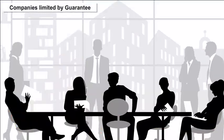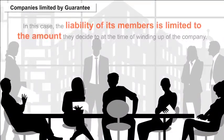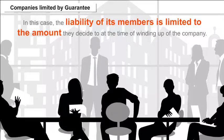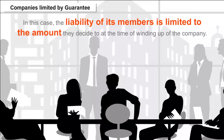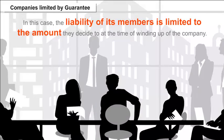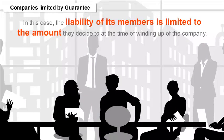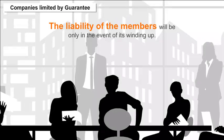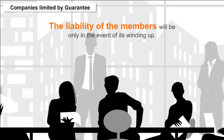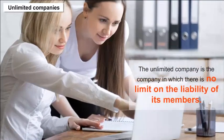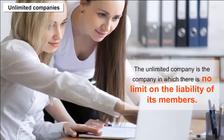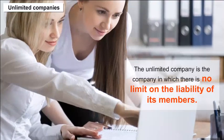Companies Limited by Guarantee: The liability of members is limited to the amount they decide at the time of winding up of the company. Thus the liability of members will arise only in the event of winding up. Unlimited Companies: An unlimited company is one in which there is no limit on the liability of its members.